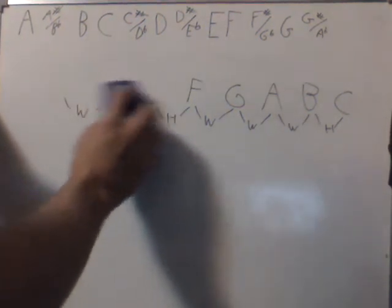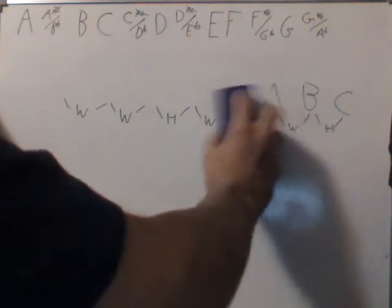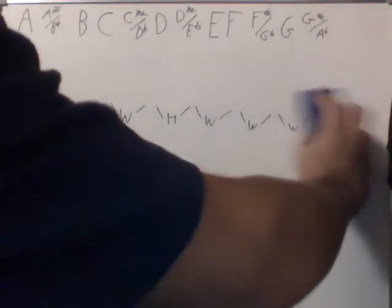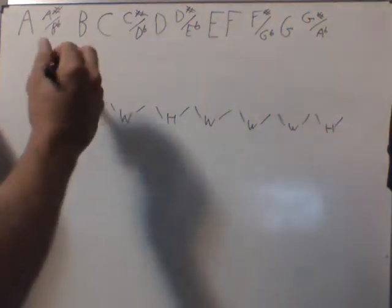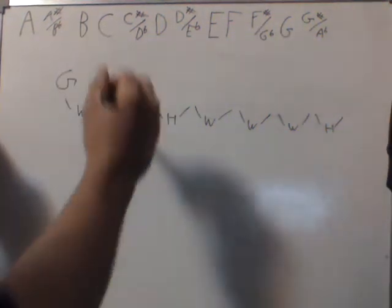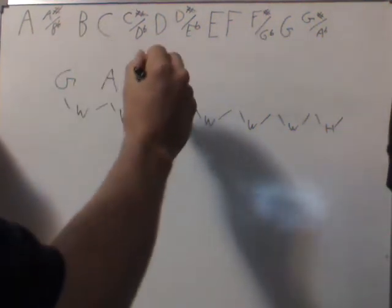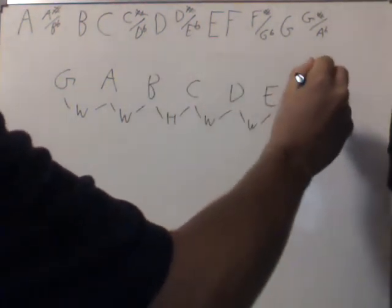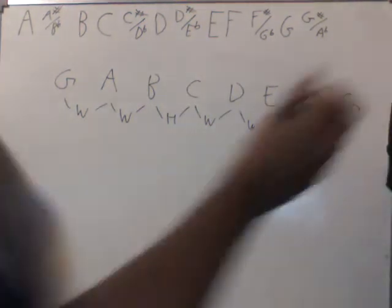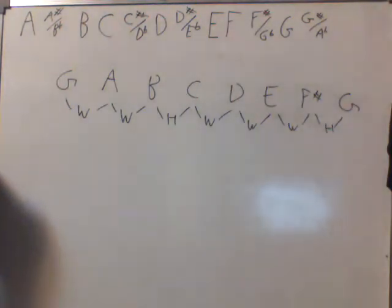So for example, if we took the C out and if we just put in a different note, let's say, let's take G. If we put a G in as the first note, we would get a G major scale: G, A, B, C, D, E, F sharp, and G. And these are the notes in a G major scale.